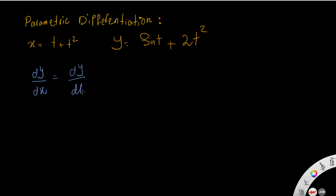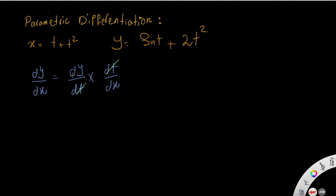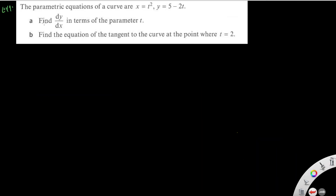Using the chain rule: dy/dx equals dy/dt times dt/dx. To make it easier to remember, the dt terms cancel out, leaving dy/dx. Equivalently, dy/dx equals dy/dt divided by dx/dt, since dt and dt cancel, and that is exactly what we need.